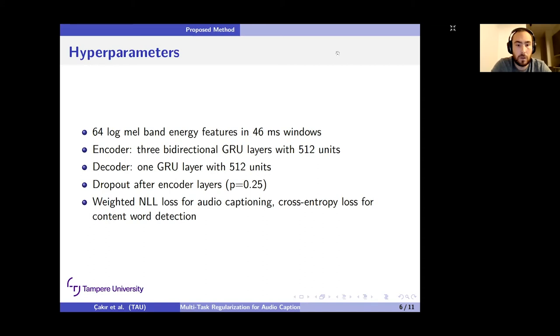For our loss functions we use weighted negative log-likelihood loss for audio captioning, with weights inversely proportional to the word frequency. And we employ cross-entropy loss for content word detection.